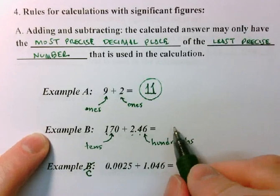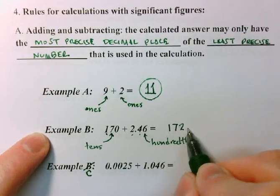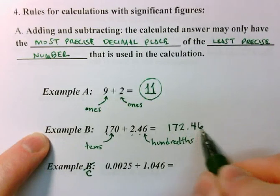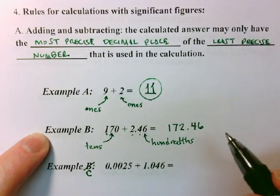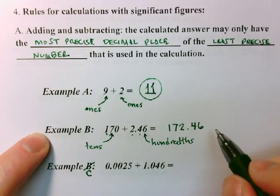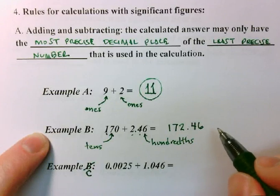Now if I plug this calculation in to a calculator, that would be the mathematically correct answer. But remember, your calculator is not a scientist. Your calculator is a mathematician. So we have to apply our scientific intuition and our rules to determine what is the scientifically appropriate, scientifically significant answer.